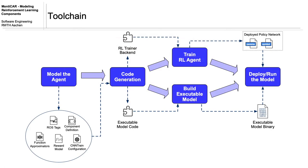We present a toolchain that can be used for modeling and training reinforcement learning agents with the MontyCar language family. The toolchain consists of multiple steps. In the first step, we model an agent with the architecture description language EMADL. Based on the model, we generate executable code that consists of a trainer backend and the executable model that deploys the policy function of the agent.